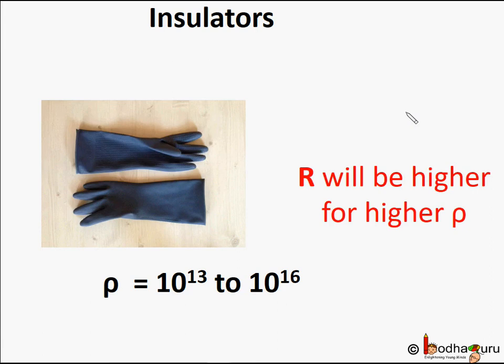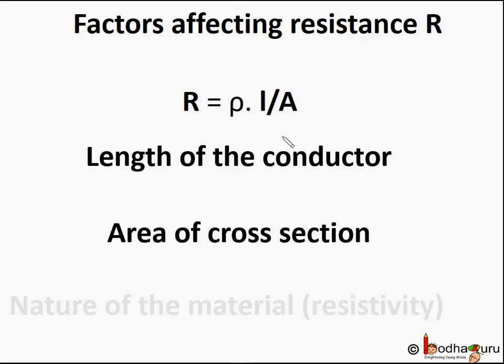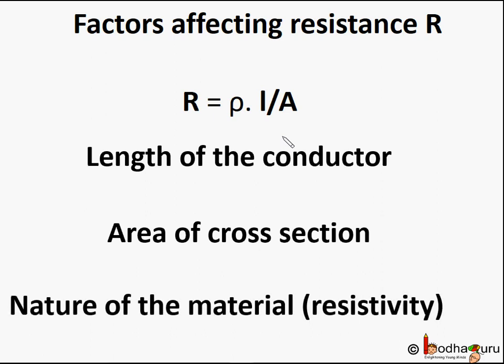Even diamond has very high resistivity — 10¹² to 10¹³ ohm meter — but it is very costly too. To summarize, the factors affecting the resistance of a conductor are: length, area of its cross section, and the nature of its material, which is the resistivity of the material. Higher resistivity rho, longer the conductor, or lesser cross-section area of the conductor — all three increase the resistance of the conductor.